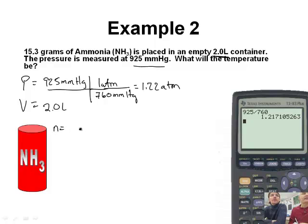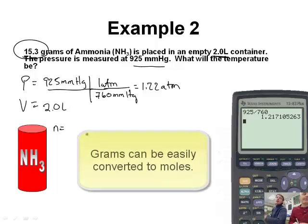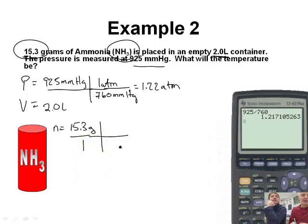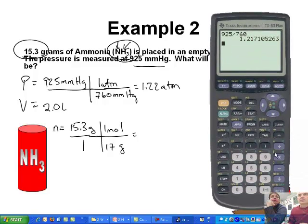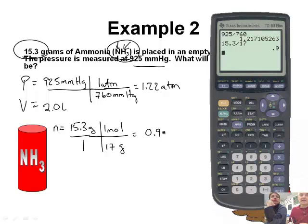PV = nRT. We don't have n directly, but we have grams. We can turn grams into moles quite easily. We have 15.3 grams over 1, and ammonia is NH3. Looking at the periodic table, the molar mass of NH3 is 17 grams per mole. So 15.3 divided by 17 gives us 0.900 moles.